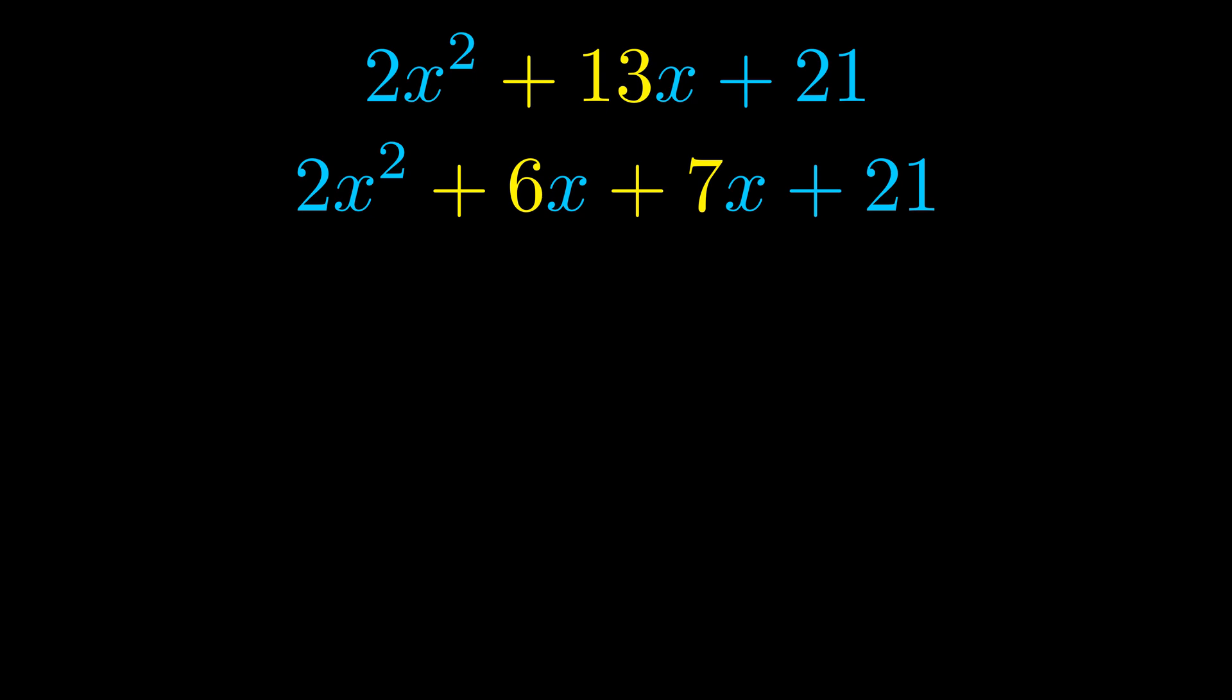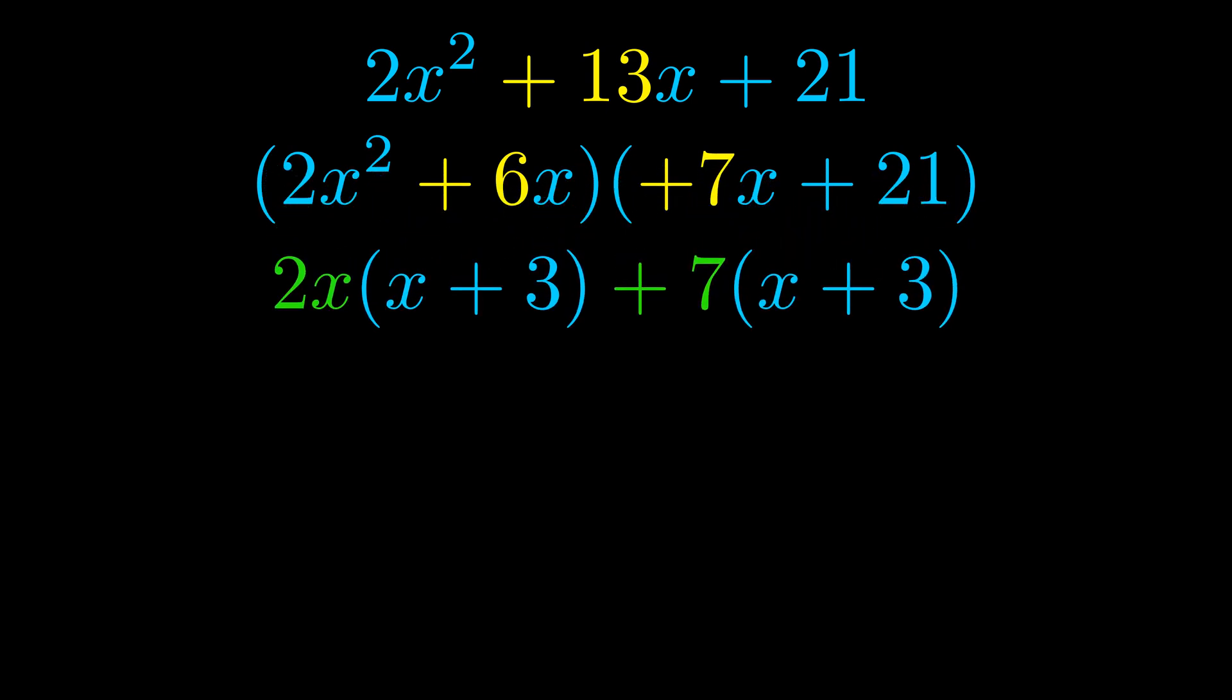Once we've done this we go ahead and we put parentheses around the first term and the last term. And we do that so that we can take the greatest common factor out of both terms. We can see the greatest common factor is now outside in green.